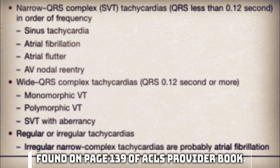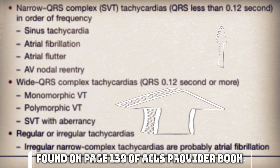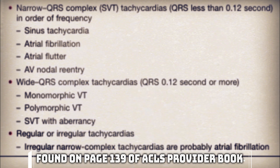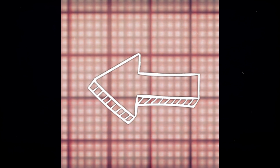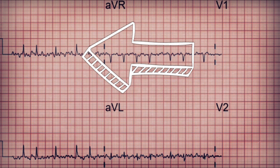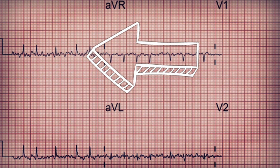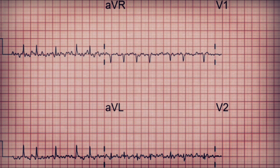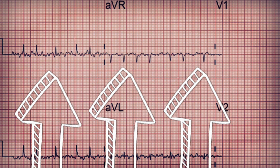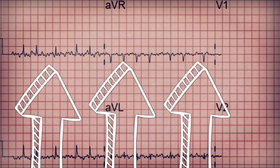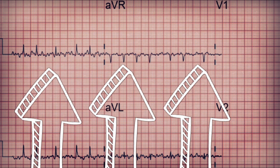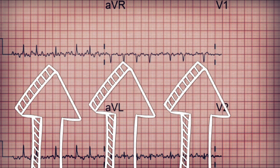For the remaining questions we need to look more closely at the EKG. On page 139 of the ACLS provider book, we need to determine if we have a narrow or wide QRS and if the rhythm is regular or irregular. Each small box on this 12-lead EKG is 0.04 seconds. Measuring one QRS complex, we can see it is less than 0.12 seconds, or smaller than 3 boxes. We can also see there is no definite P wave.